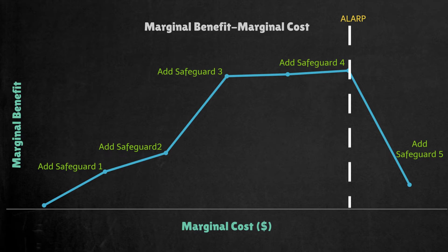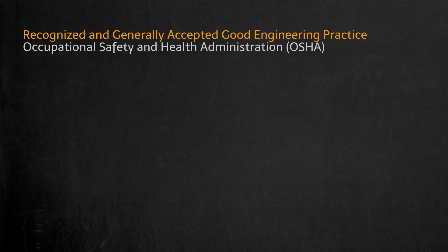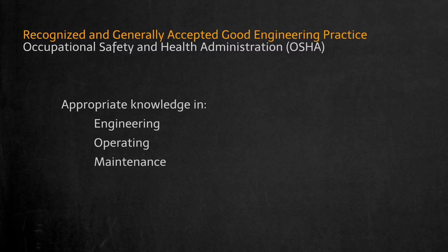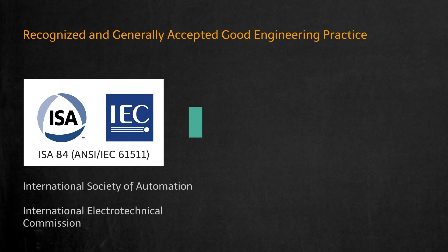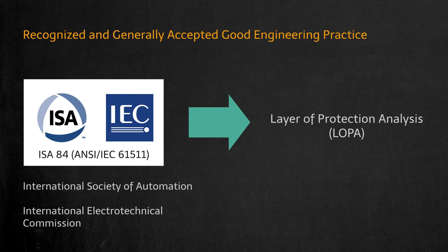In essence, the risk being reduced to be ALARP is about weighing the risk against the sacrifice needed to further reduce it. In order to demonstrate ALARP, recognized and generally accepted good engineering practice should be used. This term, originally used by the Occupational Safety and Health Administration (OSHA), means that appropriate engineering, operating, and maintenance knowledge should be applied when designing, operating, and maintaining chemical facilities. One of the accepted engineering practices is applying the LOPA methodology, which is specified in the IEC 61511 / ISA 84 standard. This standard describes a risk assessment approach to understand the gap between the targeted risk acceptance and the risk in a design, allowing process designers to find reasonable solutions to meet ALARP.